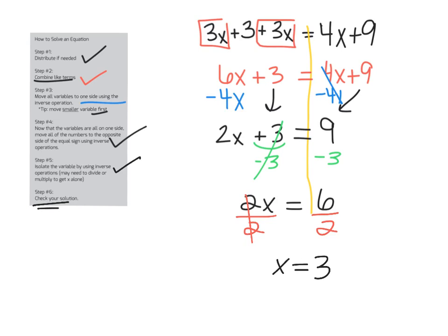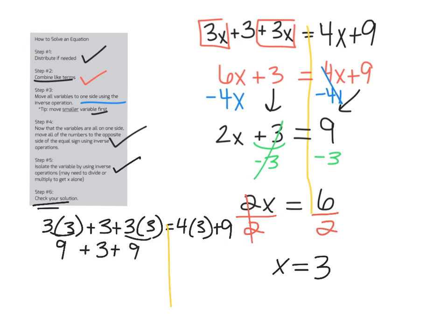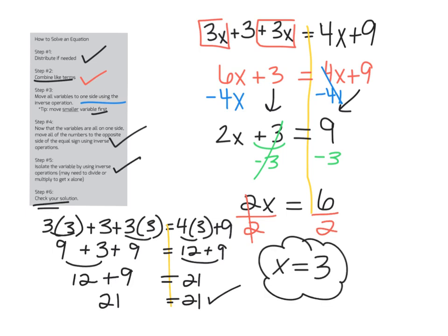Final step here, we need to go in and check our solution. So I'm going to rewrite my equation. I have 3 times 3 plus 3 plus 3 times 3. Holy moly, that's a lot of 3s. Equals 4 times 3 plus 9. If the left side equals the right side, when we simplify this, we know our answer is correct. I have 9 plus 3 plus, we've got to do our multiplication here, 9. And I have, on this side, I've got 12 plus 9. Let's simplify a little more. 12 plus 9 is 21. 9 plus 3 is 12. And 12 plus 9 is 21. 21 does equal 21. So, woo-hoo, our answer checks.